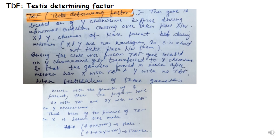When fertilization with a normal female occurs, progenies with XX-carrying-TDF and XY-with-no-TDF result. The individual with 44+XX carrying TDF will be male despite having a female chromosome constitution, because the X chromosome carries the Testis Determining Factor gene. Similarly, 44+XY with no TDF on the Y chromosome will be female, because the Y chromosome lacks TDF. TDF is therefore a critical gene responsible for maleness in humans.